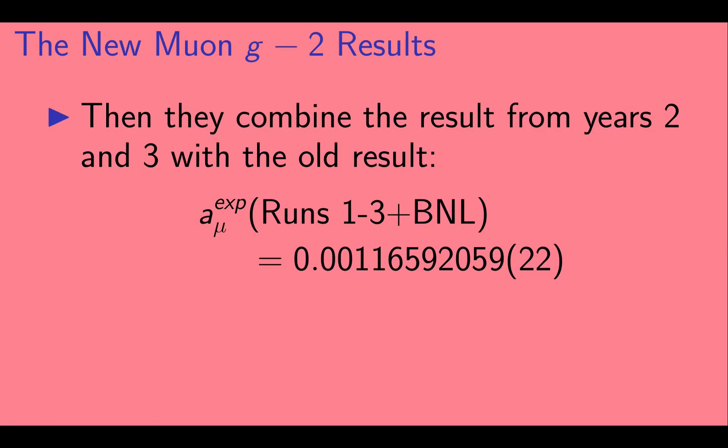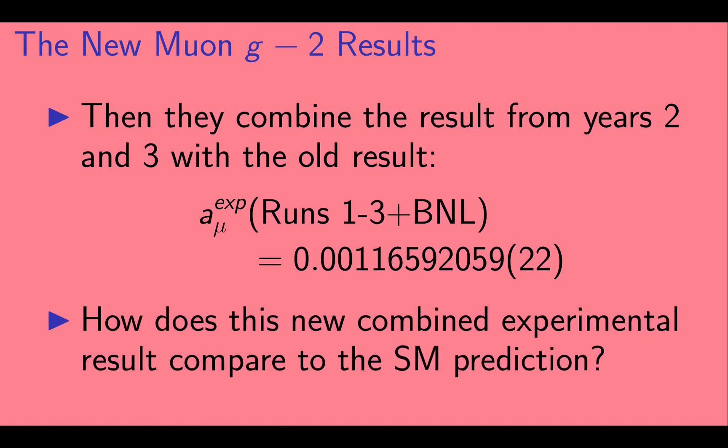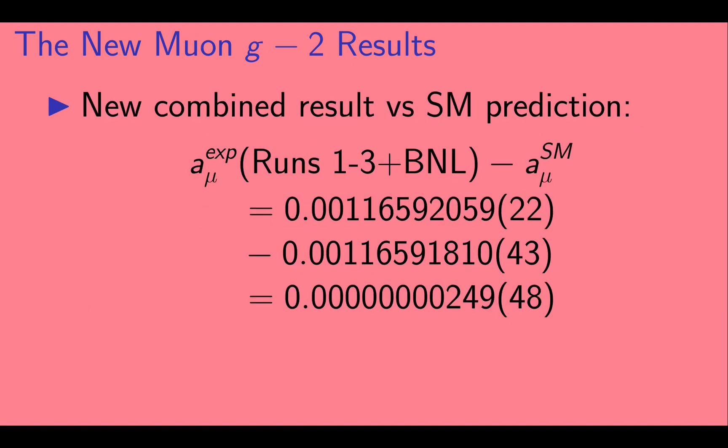They then combine the new result from years 2 and 3 with the old result to further reduce the experimental uncertainty. How does this new combined experimental result compare to the standard model prediction? Let's compare them. Here we take the new experimental result and the standard model prediction and subtract them to get the difference along with its uncertainty. This amounts to a 5.1 sigma discrepancy.